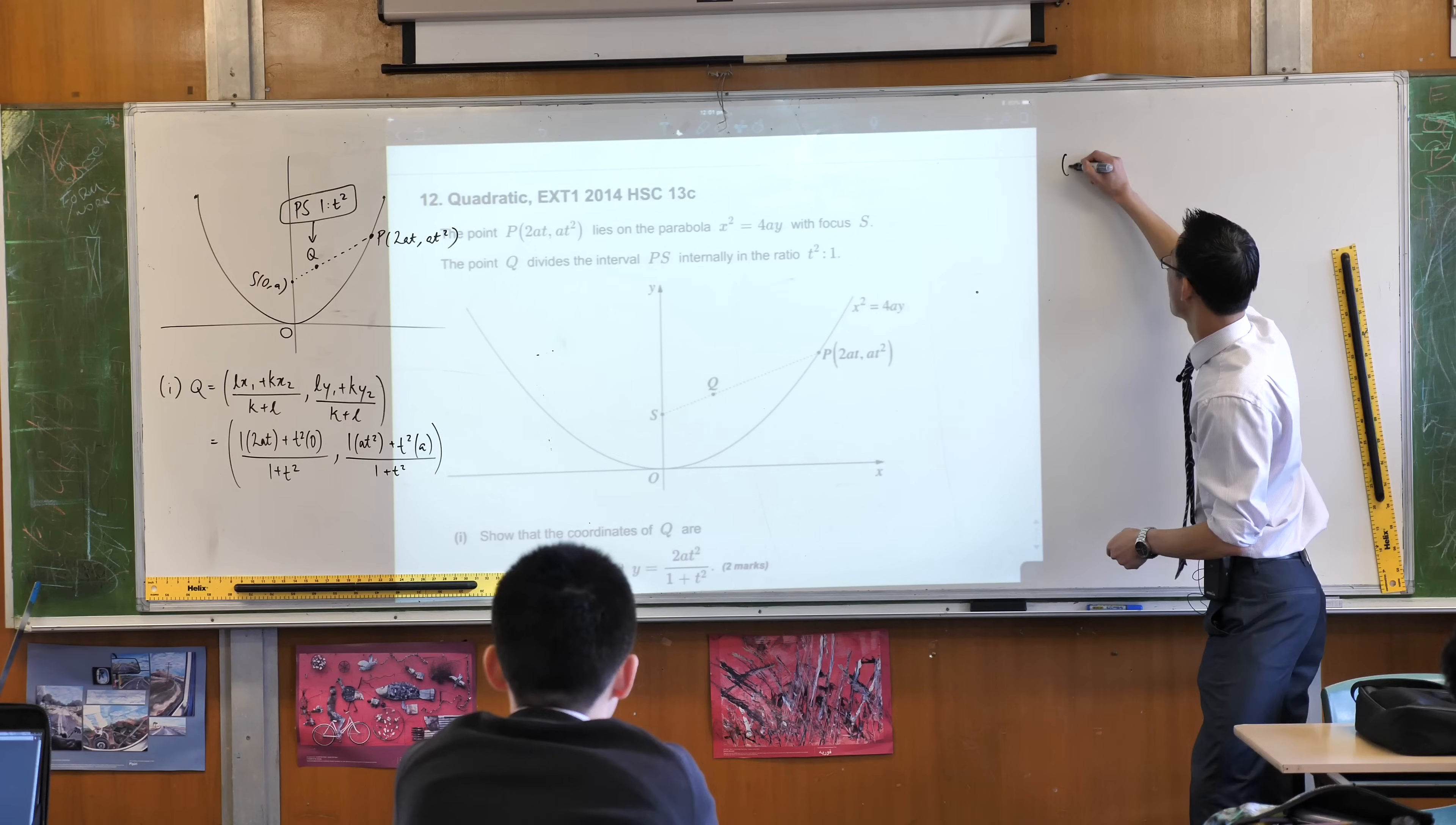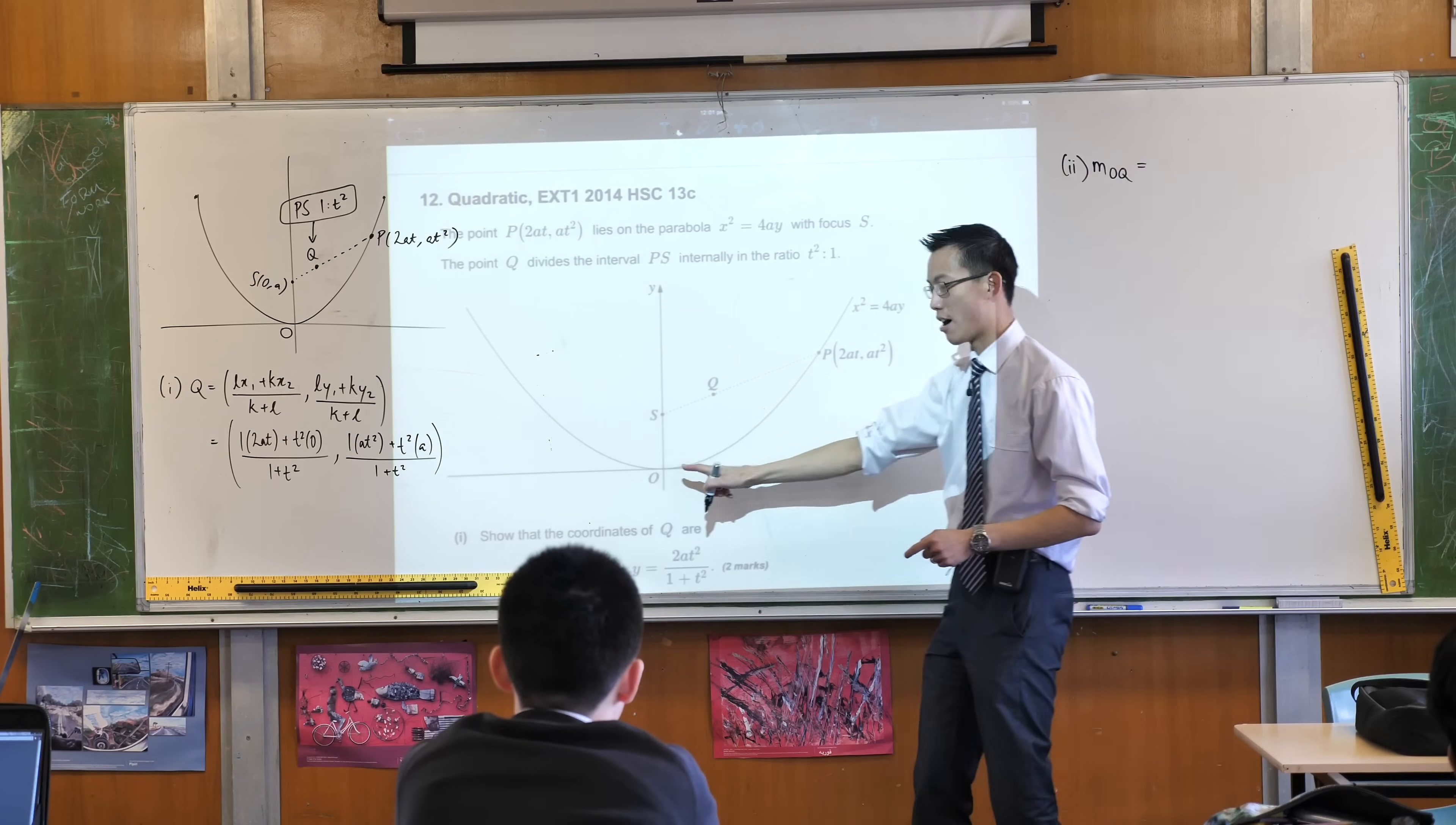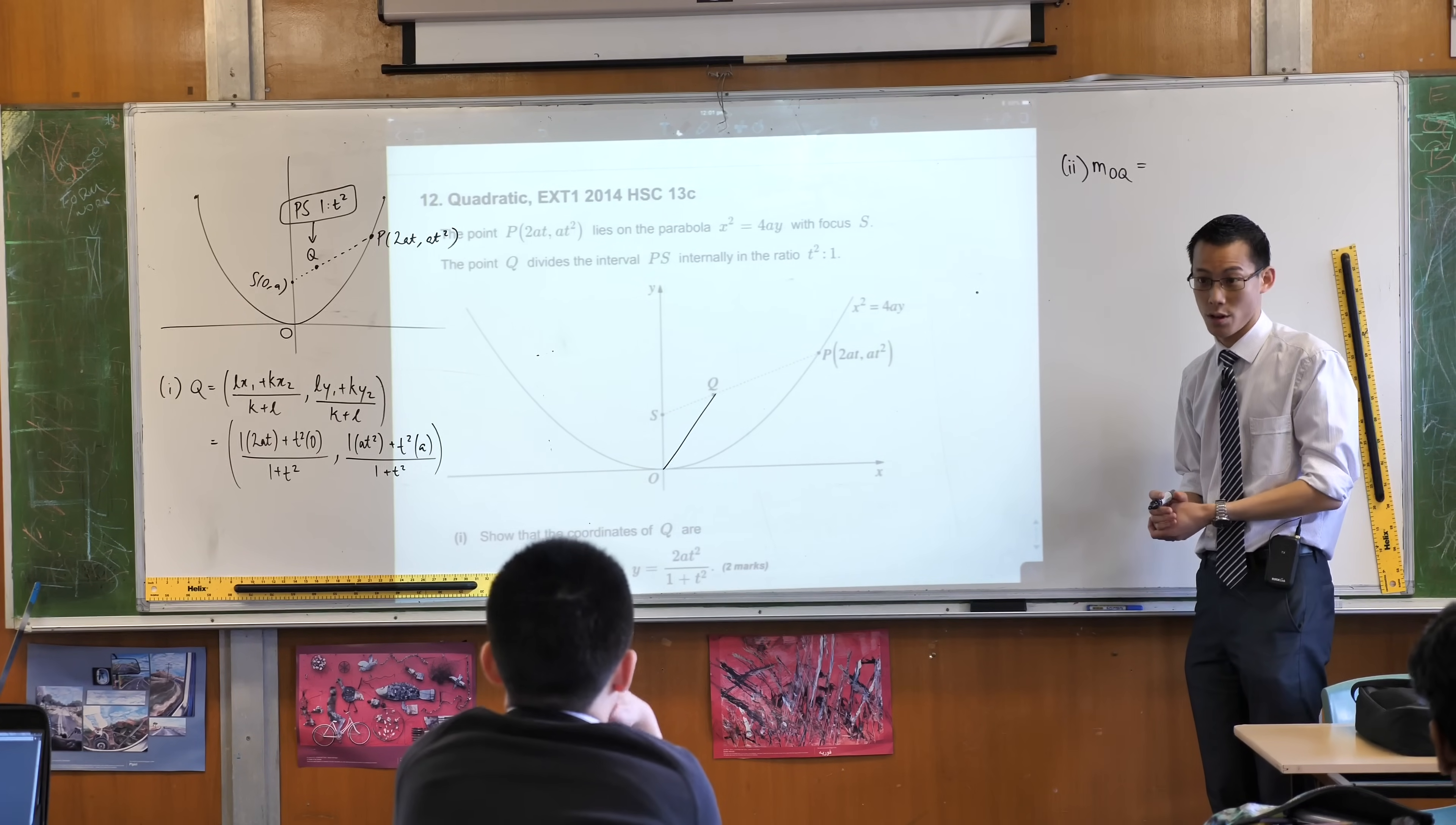Part two I'd like you to help me walk through. What are they asking for? Gradient of? Gradient oq. So o of course is our origin over here. So they're interested in the gradient of that line. We just went and found out where q was. So this is just a matter of rise over run.